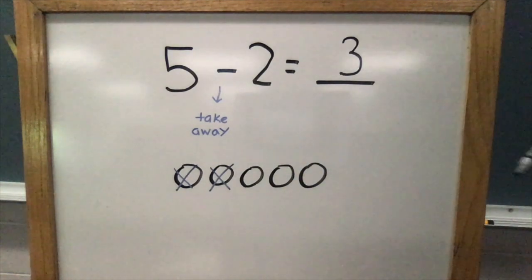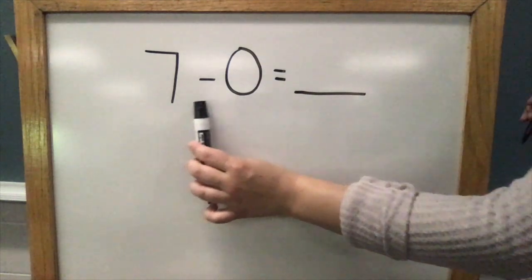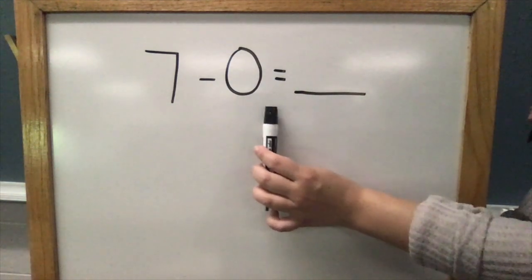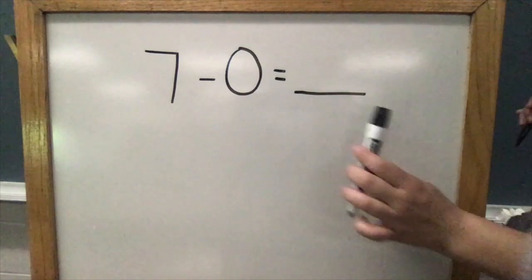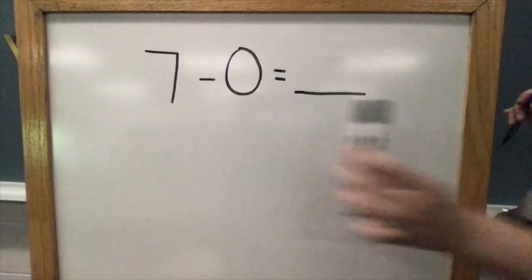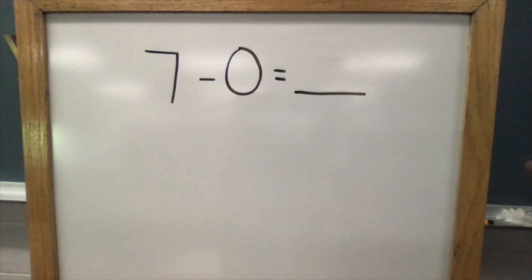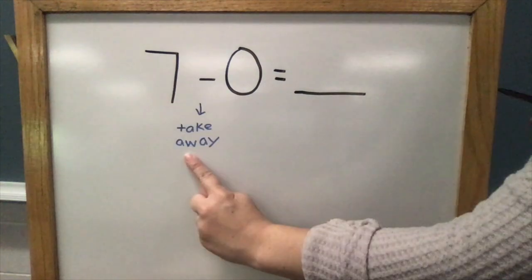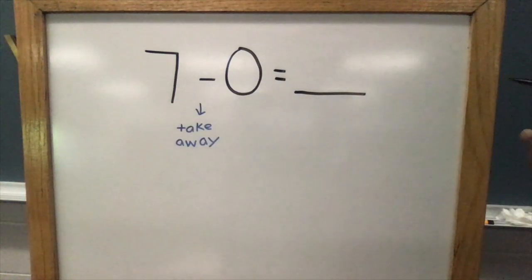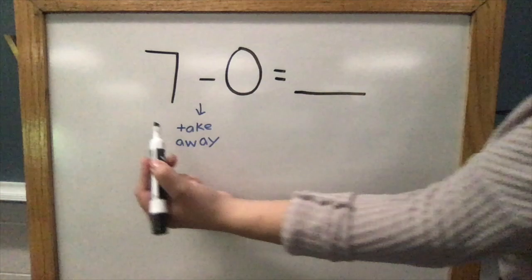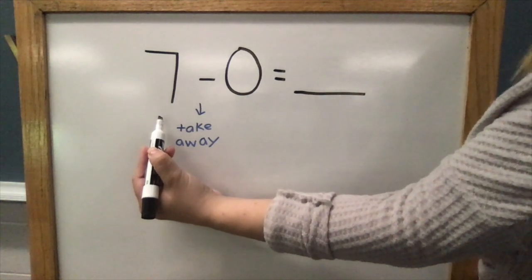Let's try another one. Our next one is 7 - 0 = __. Do you remember what the minus sign means? Minus means take away. To solve this problem, I'll start by showing seven. What could I use to draw seven? You're right, counters.